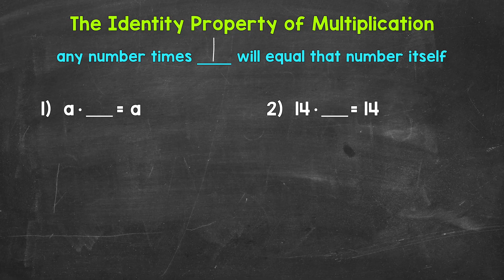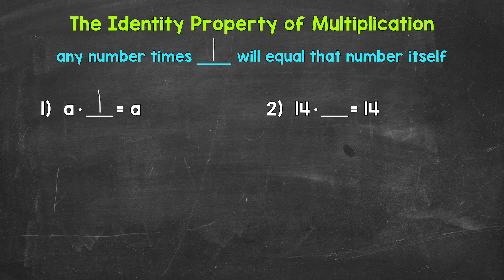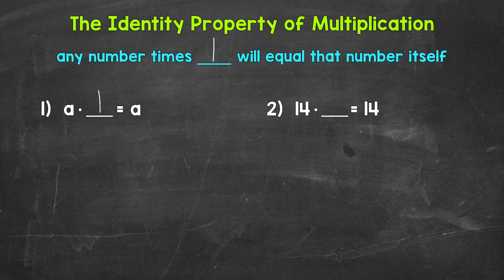where we have a times what equals a? Well, a times 1 equals a. a just represents any number. We can plug in any number for a, and the identity property of multiplication will apply. a times 1 equals a.